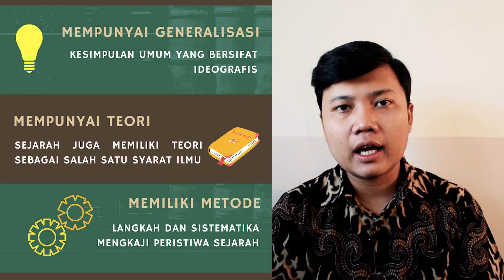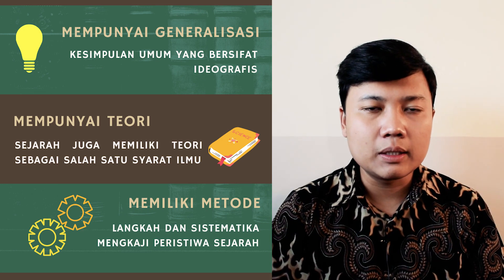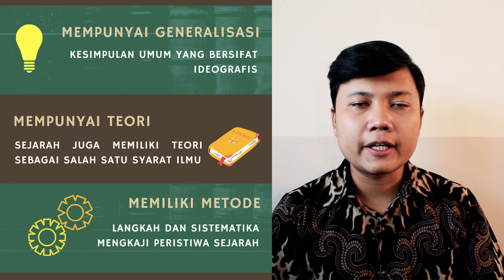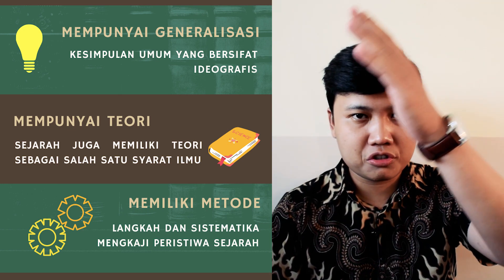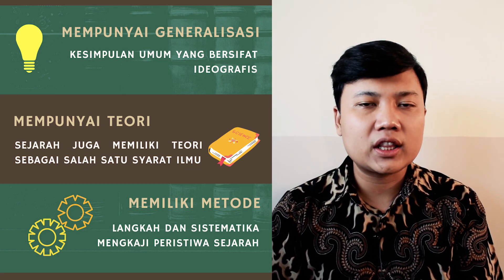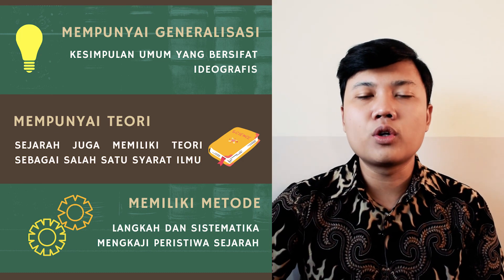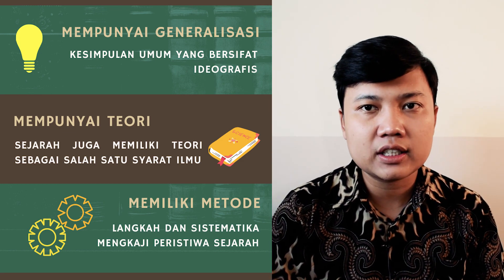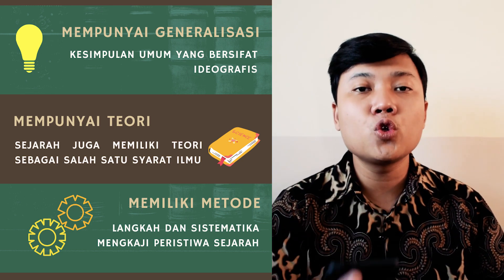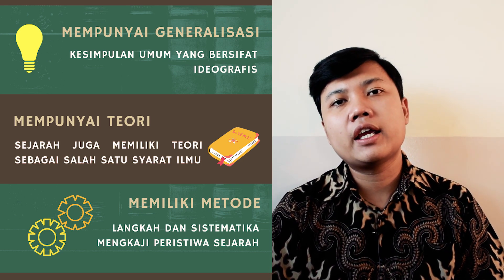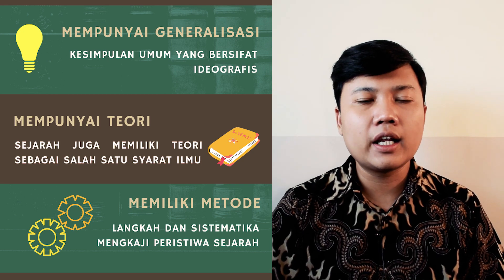Bagaimana manusia merespons tantangan-tantangan alam yang mereka hadapi. Siklusnya hampir mirip dengan Ibn Khaldun: tumbuh peradaban, berkembang, mandek, sampai akhirnya runtuh. Contoh objek dari teori peradaban Arnold Toynbee adalah peradaban sungai Indus, peradaban Mesopotamia, peradaban Mesir — peradaban-peradaban tertua di dunia. Teori-teori sejarah itu berbicara soal pola gerak sejarah, kekuatan yang menggerakkan sejarah, dan bagaimana menjelaskan gerak sejarah umat manusia.